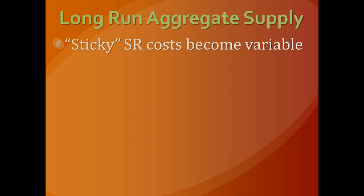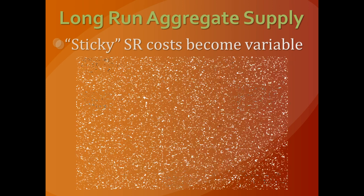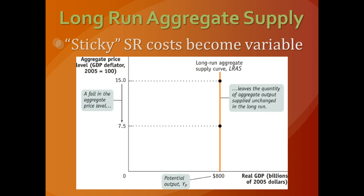To start, we remind ourselves that long run aggregate supply is that point at which all costs are variable — they stop being sticky, particularly wages — and we find that long run aggregate supply intersects the horizontal axis at what we call potential output.